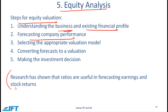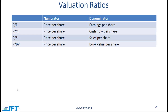In this particular reading, we are focused on ratios, and there is substantial evidence that ratios are useful in forecasting earnings and stock returns. Some of the important valuation ratios for equity are price to earnings — this is the price per share divided by the earnings per share — price per cash flow, price per sales, and price per book value. The book value of a company is also called the net asset value, or the value of assets minus the value of liabilities.